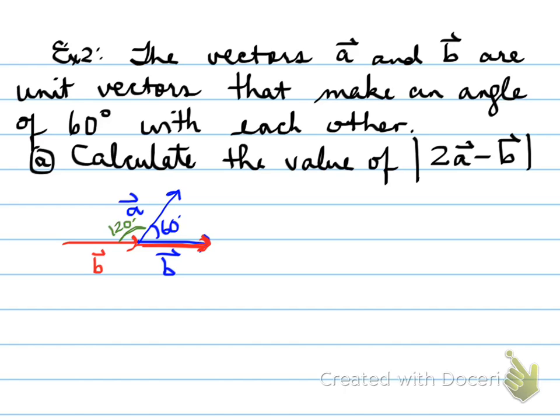We need the value of 2 vector a minus vector b. What does that mean? Well, you double the a's and you change the direction of the b so that you have 2a minus b. And the result will be the green arrow coming up this way.